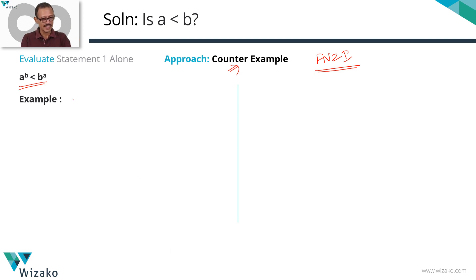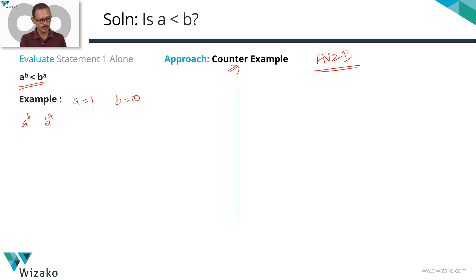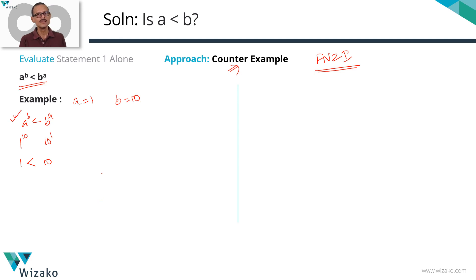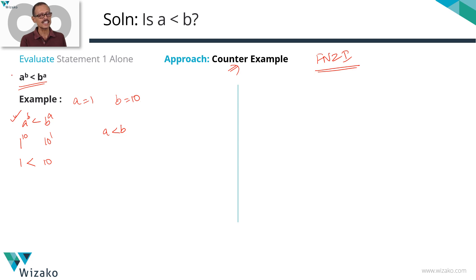a^b = 1^10 = 1, and b^a = 10^1 = 10. So 1 < 10, which means the condition a^b < b^a is satisfied. With a = 1 and b = 10, a is less than b. The answer to the question 'is a less than b?' with this example is yes. So we need to look for a counter example that gives a no.